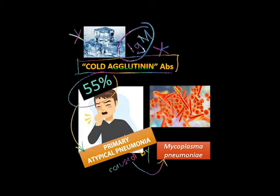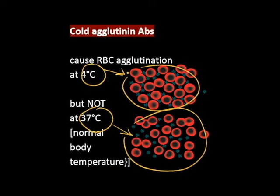Cold agglutinin antibodies are found in the serum of approximately 55% of patients with primary atypical pneumonia, a respiratory disease caused by Mycoplasma pneumoniae. These antibodies cause agglutination of adult red blood cells at 4 degrees Celsius, but not at normal body temperature, which is 37 degrees Celsius.